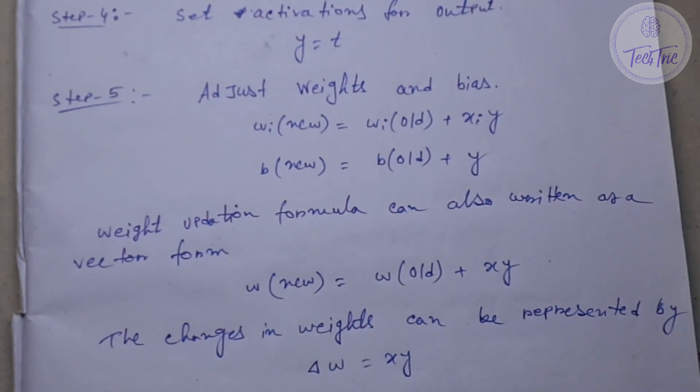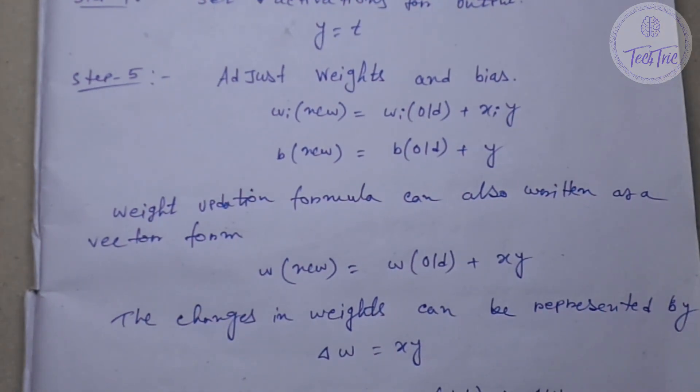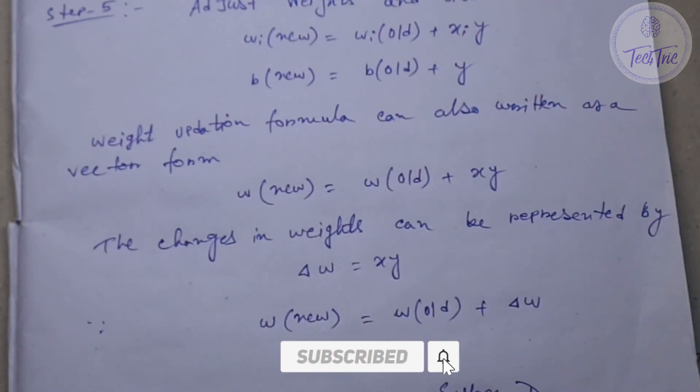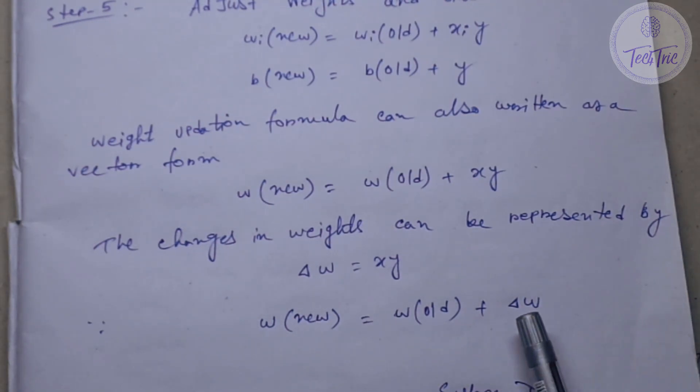Weight updation formula can also be written in vector form like this: W(new) equals W(old) plus X times Y. The changes in the weights can be represented as delta W equals X times Y, and this is how the final formula will look like: W(new) equals W(old) plus delta W, or the changes of weights.